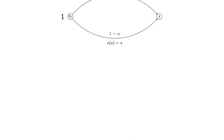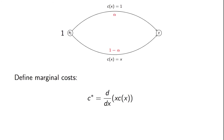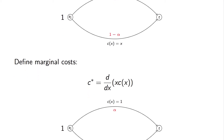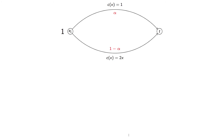Similarly, if we take our game and define the marginal costs to be the derivative of x times c(x), then our game now has latency functions 1 and 2x. So we're just changing the latency functions there.